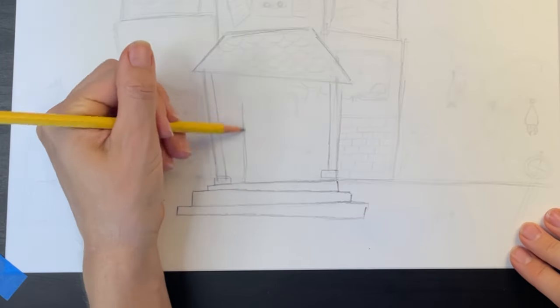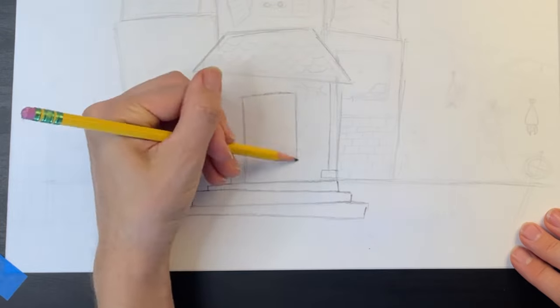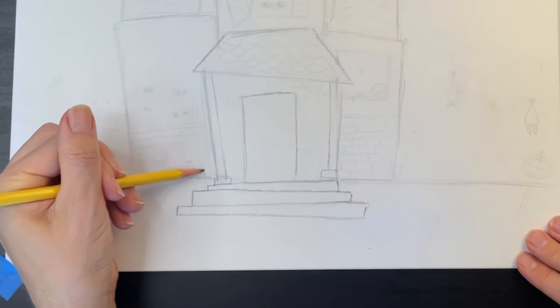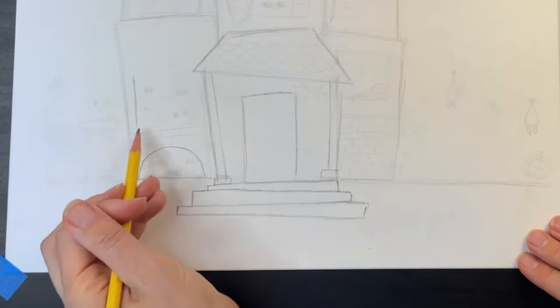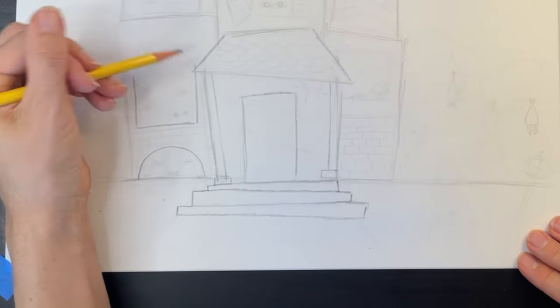Now I'm adding a rectangular doorway, a half circle that's going to be a basement window, and a large rectangular window right above it.